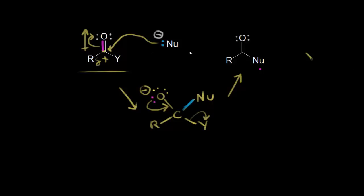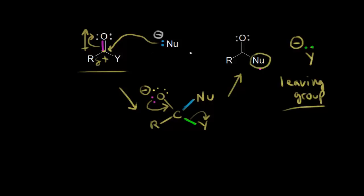When those electrons move off, we form Y negative — a negative one charge on our Y. This is our leaving group. The end result is to substitute our nucleophile for our Y substituent. This portion is called an acyl group, so we have nucleophilic acyl substitution where our nucleophile substitutes for the Y group.